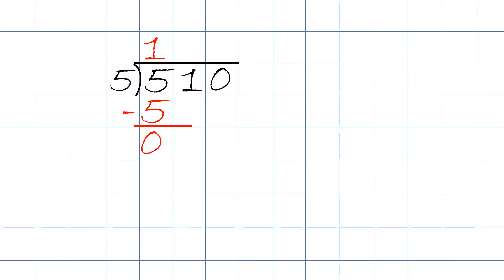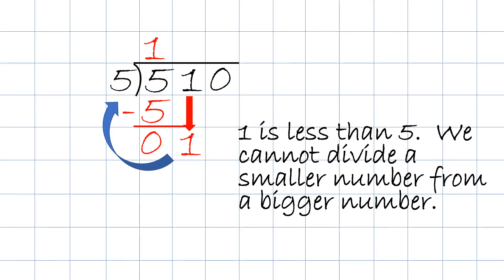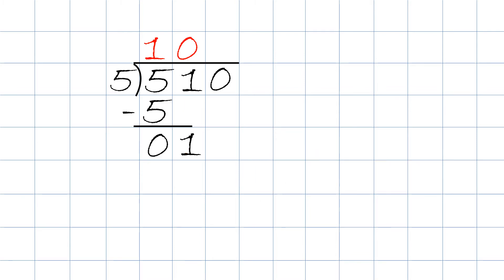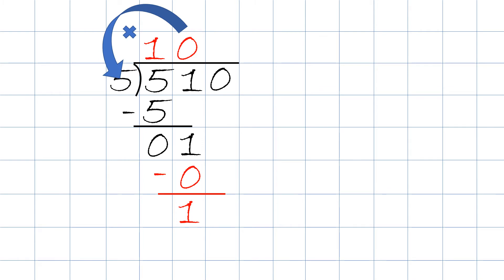Then the 1 next to the 5, we bring it straight down. Now we take 1 divided by 5. But since 1 is less than 5, we cannot divide a smaller number by a bigger number — otherwise we'll get a decimal. So the answer: we just put 0 over the 1. Every time a smaller number is divided by a bigger number, we just write 0. We then take 0 times 5, the answer will be 0 — we write it underneath the 1. We then take 1 minus 0, the answer will be 1. Then in the dividend, the last 0, we bring it straight down. So now we have 10.